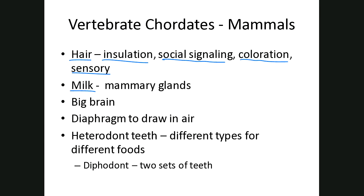Another feature of mammals is that they make milk — they feed their young with milk through special glands called mammary glands. Mammals also have bigger brains, meaning higher function or higher thinking. Another important feature is the diaphragm, which we use to breathe, to draw air into our lungs — it's a muscle that helps draw air in. Some mammals also have heterodont teeth, meaning more than one type of tooth — molars, incisors, and canines — because the teeth are for different types of foods. Many mammals are also diphyodont, meaning like us, we had two sets of teeth: baby teeth which we lost, and then mature teeth.